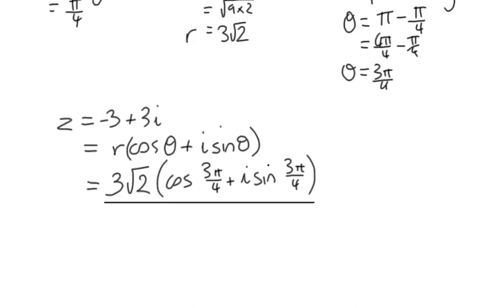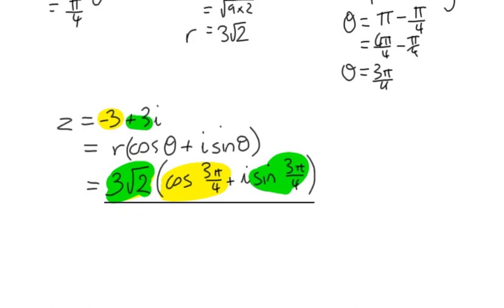If you're unsure, you can verify: 3 root 2 multiplied by cos(3π/4) gives negative 3, and 3 root 2 multiplied by sin(3π/4) gives positive 3. It's really important to know that the two forms are absolutely equivalent.